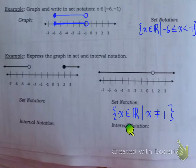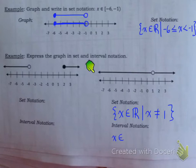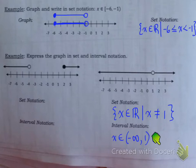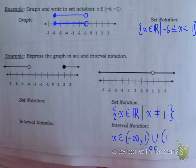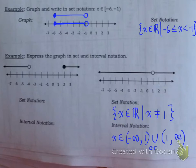This next part is probably the only time interval notation is actually worse than set notation, because in interval notation we have to write it like this. X belongs to - it starts at negative infinity with a round bracket, goes up to 1, and then it's a round bracket at 1. And then we have a connector - a union symbol that means or. So it's negative infinity to 1, or from 1 to infinity, with round brackets at 1 since 1 is not included. And that's how you write interval notation for this case.